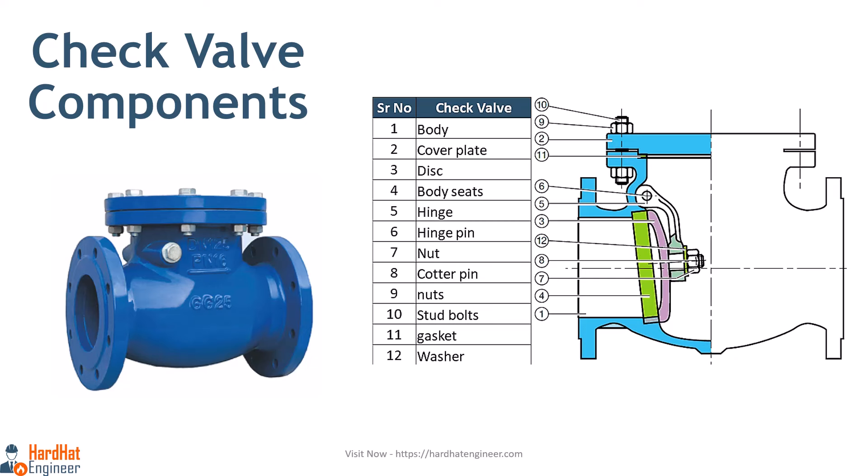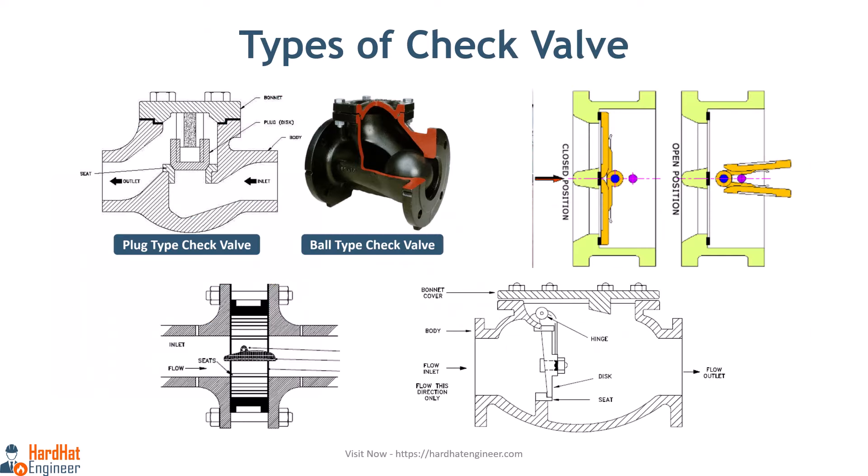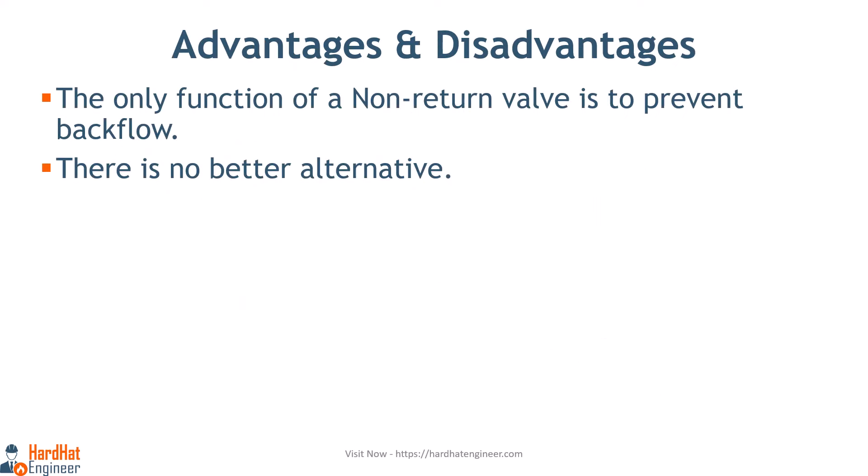Check valves are used in piping systems to prevent backflow. The rotary equipment discharge line, such as from a pump or compressor, is always fitted with a check valve to prevent backflow. The most common types of check valves are swing type, lift type, dual plate type, and stop check valve. The only function of a non-return valve is to prevent backflow — there is no better alternative, though you can choose the best NRV from the various available types.